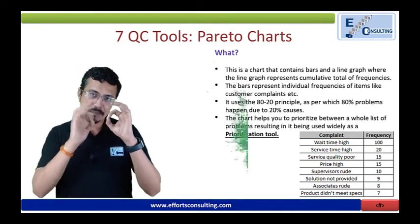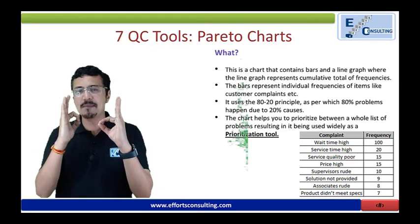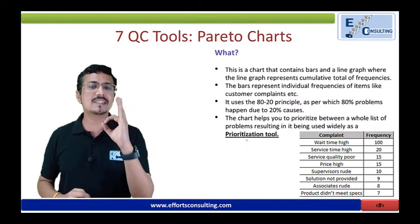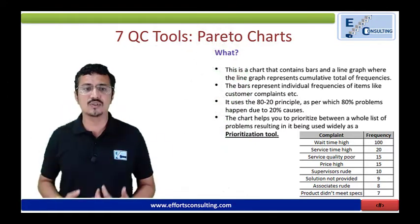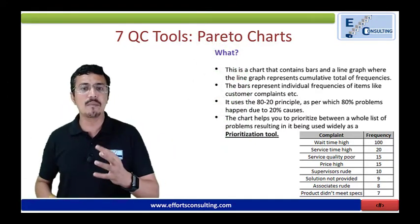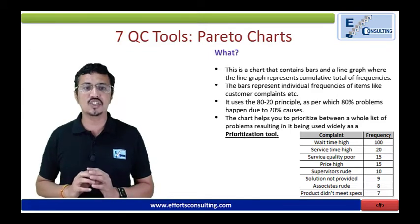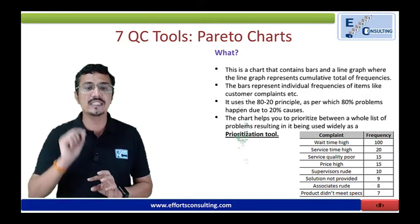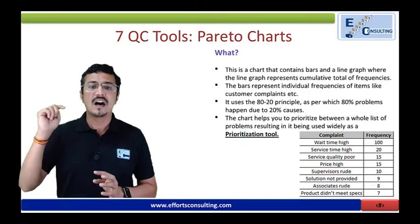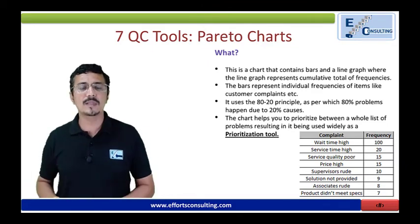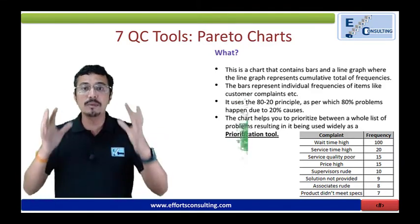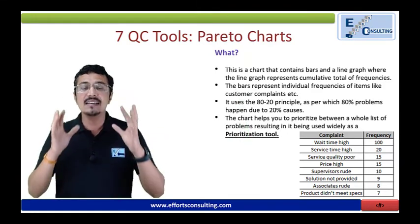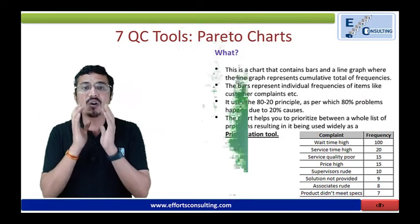The 80/20 analysis helps us understand what 20 percent of causes are impacting 80 percent of the output — what 20 percent of defects are recurring and account for around 70 to 80 percent of the issues. The Pareto chart contains bars and a line graph, where the line graph represents the cumulative total of frequencies and the bars represent individual frequencies. It uses the 80/20 principle, as per which 80 percent of problems happen because of 20 percent of causes, helping you prioritize and identify the most critical issues.